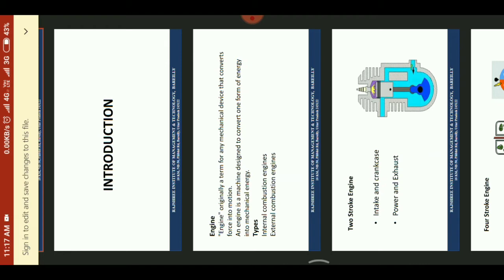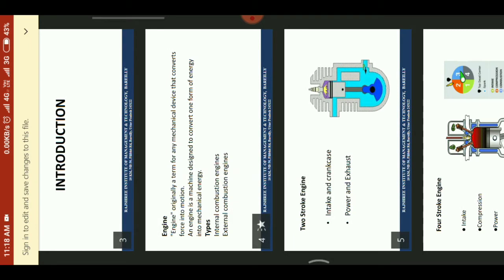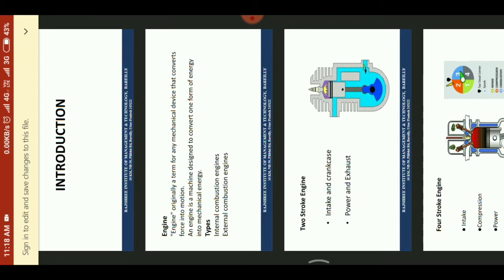An engine is only a term for any mechanical device that converts force into motion. An engine is a machine designed to convert one form of energy into mechanical energy. Types of engine: internal combustion engine and external combustion engine.